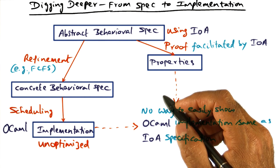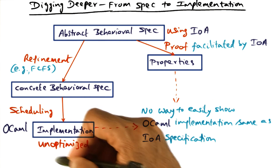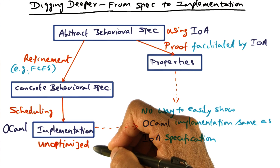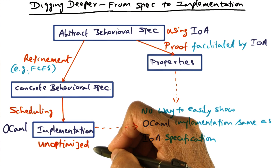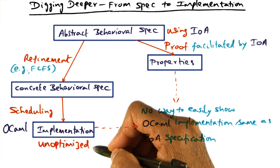And the third piece of the puzzle, of course, is going from this unoptimized version to the optimized version.